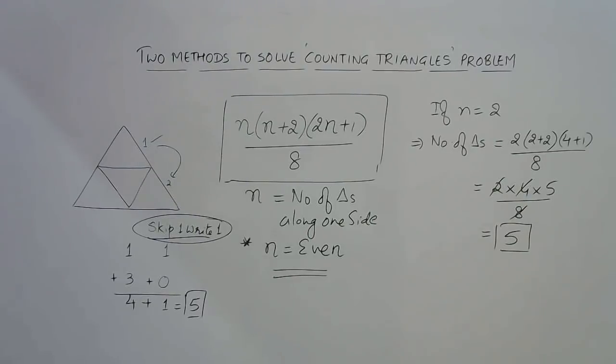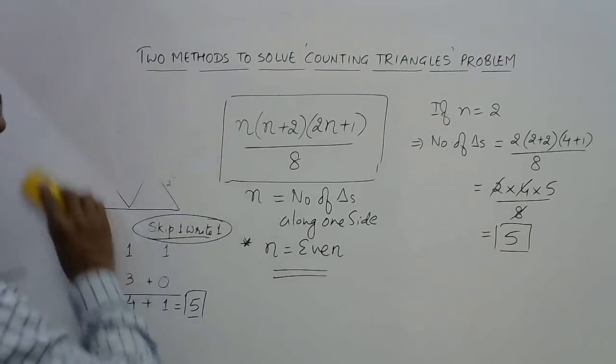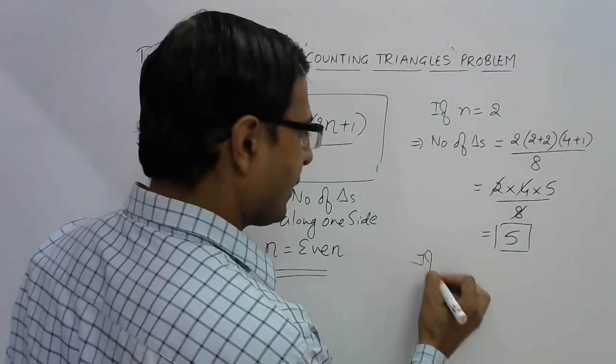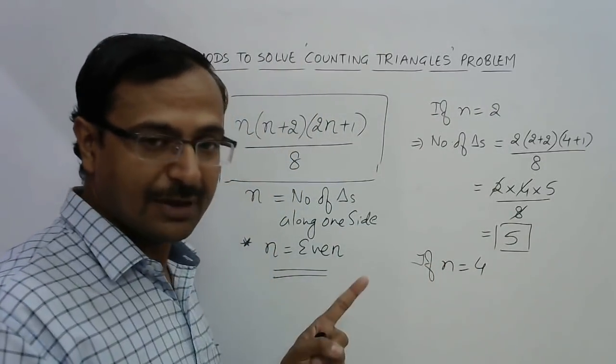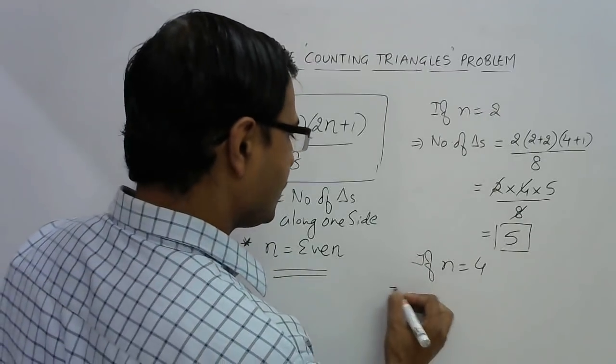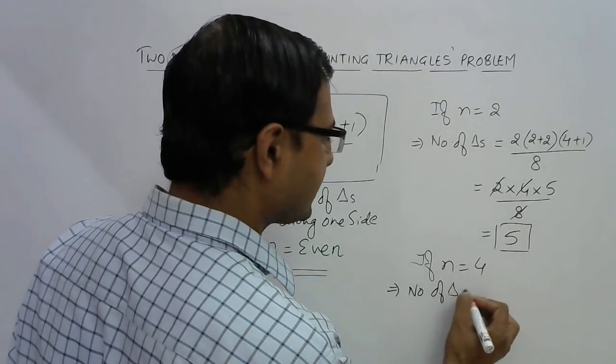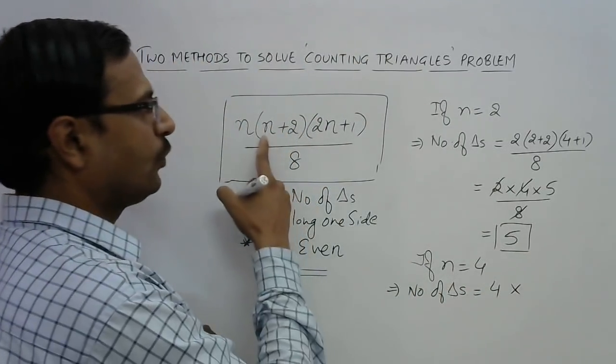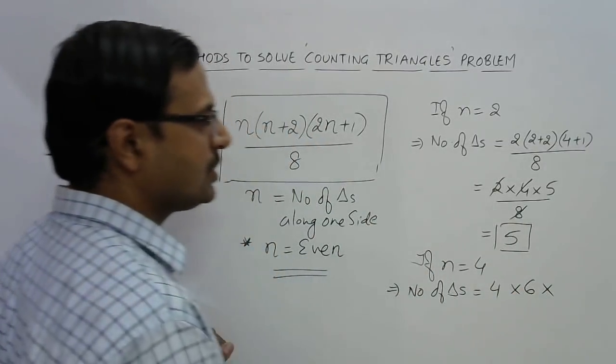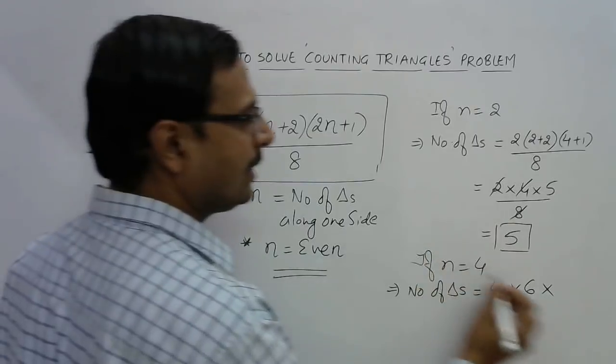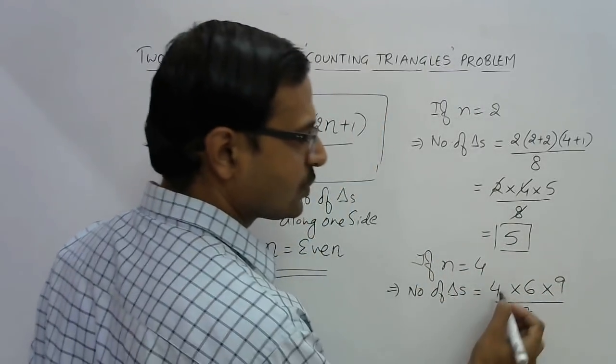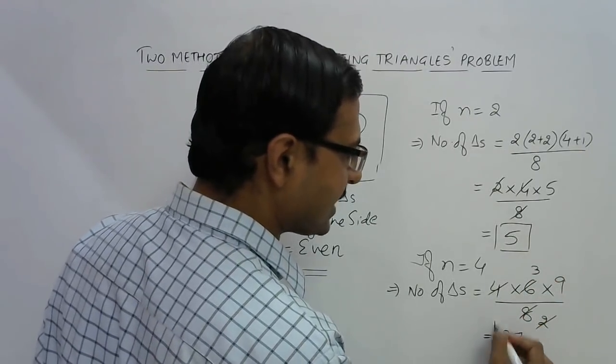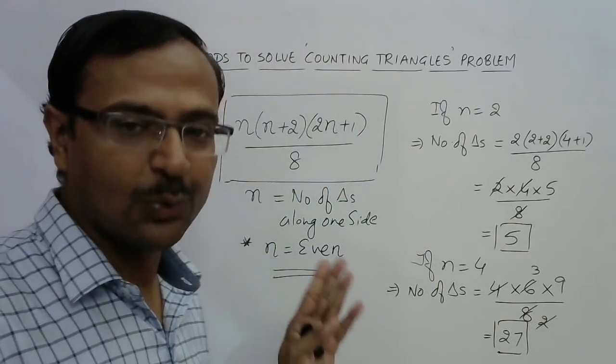Friends, you can go on and on and try this formula for different figures. Let us have n as 4 because I need to take even number of triangles. So I am taking n as 4. So if n is 4 then number of triangles is 4, that is n, into 4 plus 2, that is 6, into 4 to the 8 plus 1, 9, upon 8. So 4 cancels out 2 times and 2 cancels 3 times thereby giving you 27 triangles as the answer for n equal to 4.